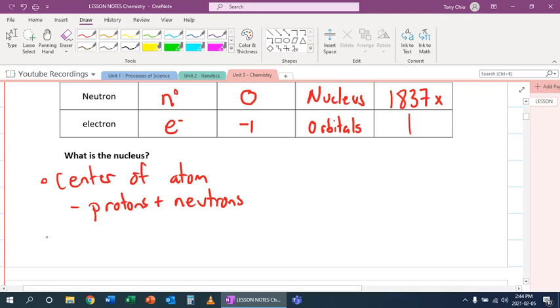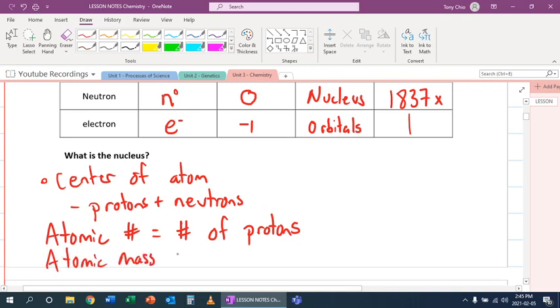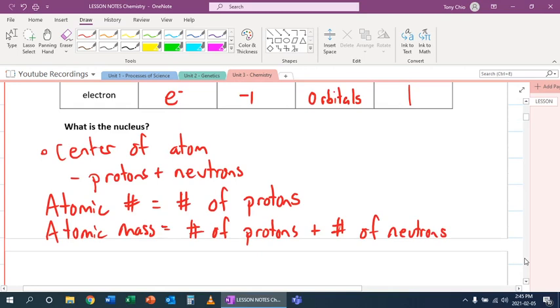we've got to know two terms. The atomic number. The atomic number is the number of protons. And each element has a different atomic number. Thus, it has a different number of protons. The atomic mass is equal to the number of protons plus the number of neutrons. It's the average of it, though, of these isotopes, we call it.